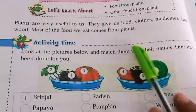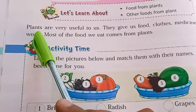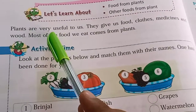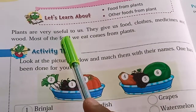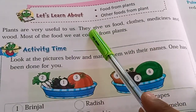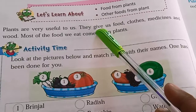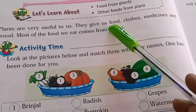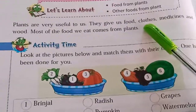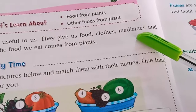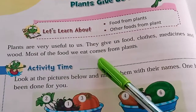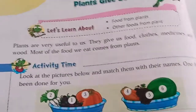So read once more. Plants — P-L-A-N-T-S — are very useful to us. They give us food, clothes, medicines, and wood.